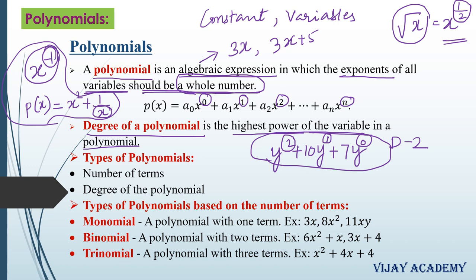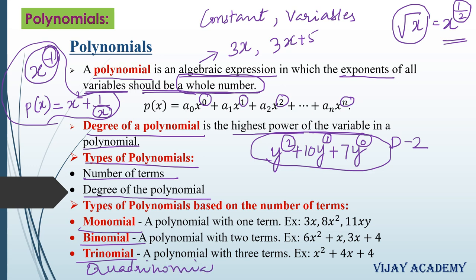We can classify polynomials based on the number of terms and also based on the degree. Based on the number of terms, we can classify polynomials into monomial, binomial, trinomial, and quadrinomial. Mono means 1, so a polynomial consisting of only one term is called a monomial — like 3x, 8x square, or 11xy.